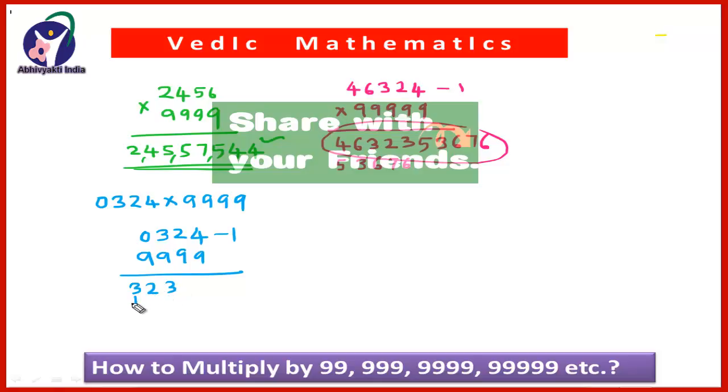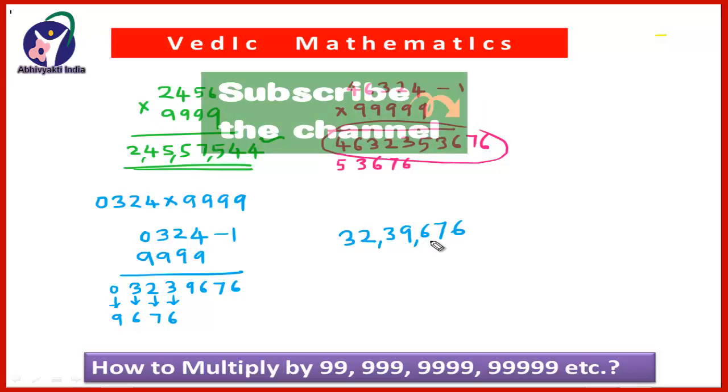Now just add a number to each digit to make it 9. So here it will be 6 and 3, 9. 2 and 7, 9. 3 and 6, 9. And therefore this number will be. But before this there is also a 0. So 0 and 9 will be 9. So write this number 9,676 here. So the product will be 323,9676. So this will be the product of the given two numbers.